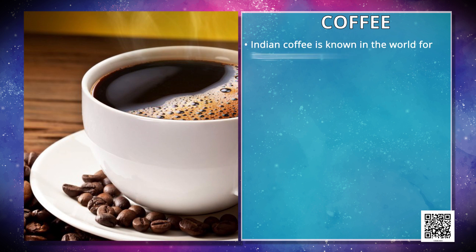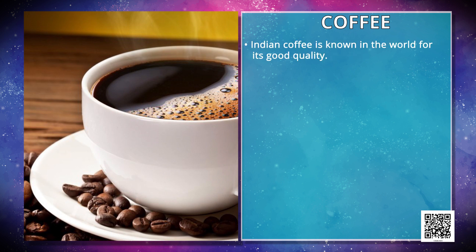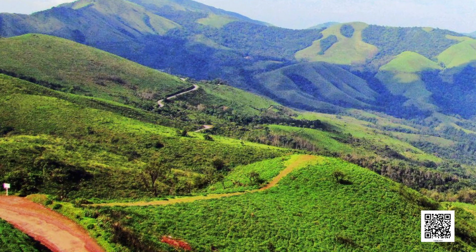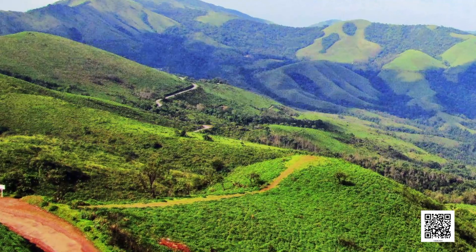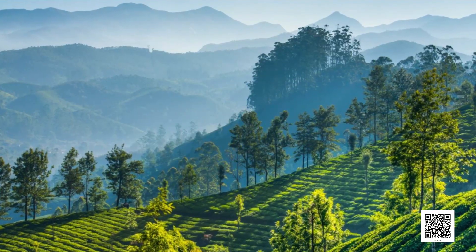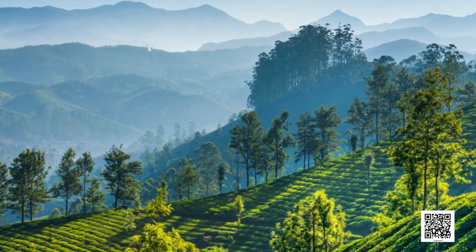From tea, we move on to coffee. Indian coffee is known in the world for its good quality. The Arabica variety, initially brought from Yemen, is produced in the country. This variety is in great demand all over the world. Initially, its cultivation was introduced on the Baba Budan hills, and even today its cultivation is confined to Nilgiri in Karnataka, Kerala and Tamil Nadu.